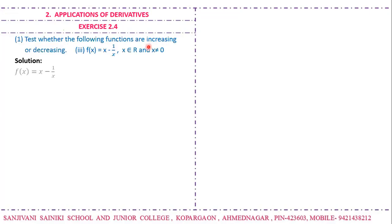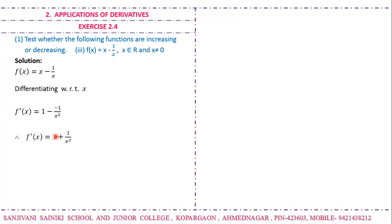The next example: f(x) = x - 1/x, where x ∈ ℝ and x ≠ 0. Differentiating with respect to x, the derivative of x is 1, and the derivative of -1/x is +1/x². Since the square of any real number is always positive, x² is positive, so 1/x² is positive. Adding two positive quantities gives a positive quantity.